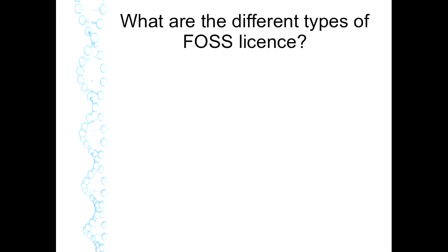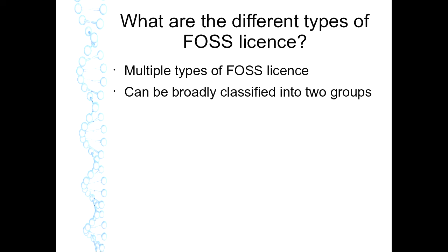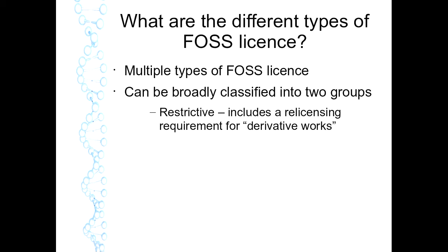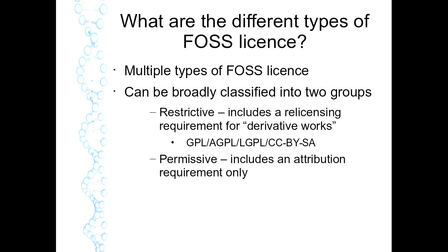It's necessary to look at what are the different types of free and open source license. There's been a plethora of different open source licenses that have evolved. From a contractual perspective, we divide them into two broad categories. Firstly, we have restrictive or copyleft licensing, which includes a re-licensing requirement for derivative works. These include licenses such as the GPL, Affero GPL, Lesser GPL, and some Creative Commons licenses — requiring you to keep re-licensing any improvements under the same license.